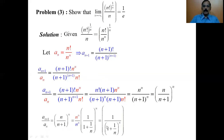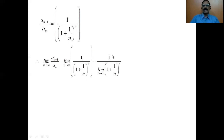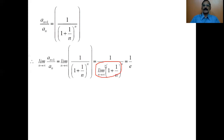The expression can be written as 1 divided by 1 plus 1/n, all to the power n. Now applying the limit as n tends to infinity: the limit of 1 plus 1/n to the power n as n tends to infinity is the well-known limit equal to e. Therefore the limit of a_{n+1}/a_n equals 1/e.